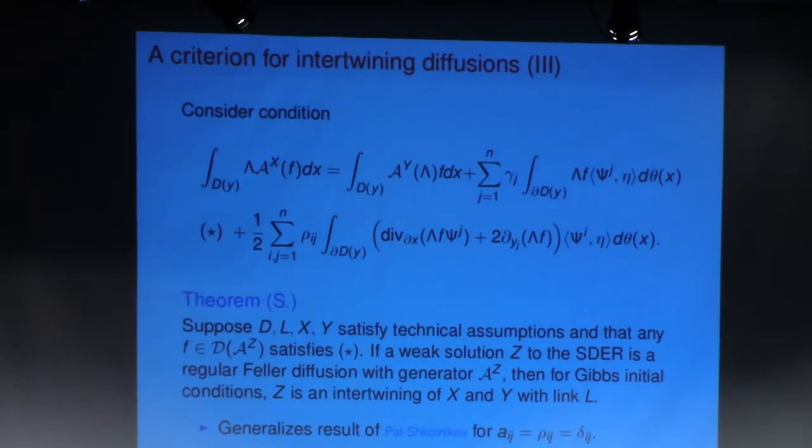Let's suppose that there's some technical but not so important conditions on the domain and the two diffusions. Now, importantly, suppose that the solution Z to this stochastic differential equation is a regular Feller diffusion with the specified generator. And also, any F in this core satisfies this slightly horrific looking identity between integrals. Then in this case, Z is going to be an intertwining of X and Y for Gibbs initial conditions.